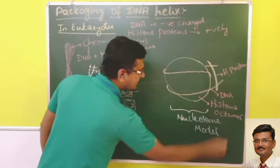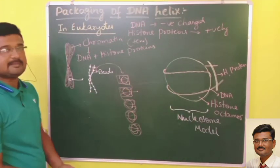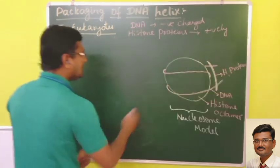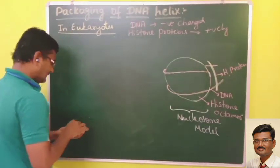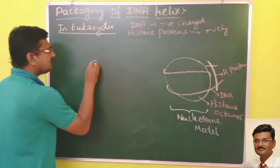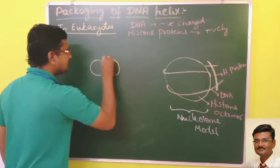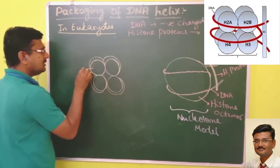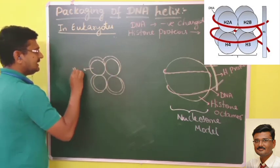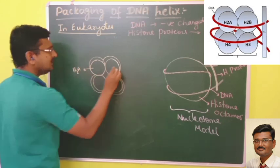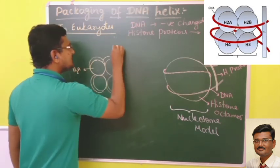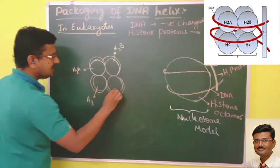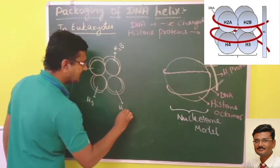The histone octamer — 'octa' meaning eight — consists of four types of histone proteins: H2A, H2B, H3, and H4. There are four proteins, each present in pairs: two H2A and two H2B, two H3 and two H4. That gives a total of eight histone proteins, hence the name octamer — a group of eight histones present in pairs.